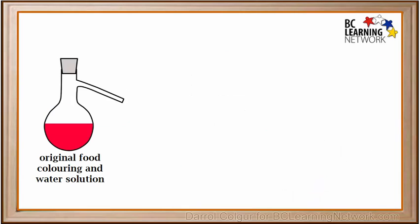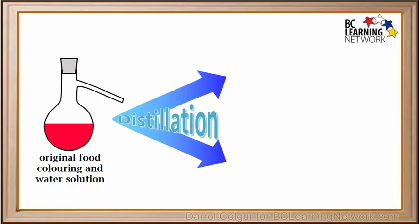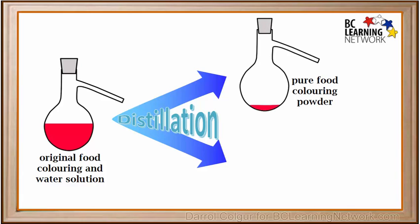So we started with a solution of food coloring in water. And using the process of distillation, we were able to separate it into pure food coloring powder and pure water. Also note that distillation enables us to recover both of the original materials without losing anything.